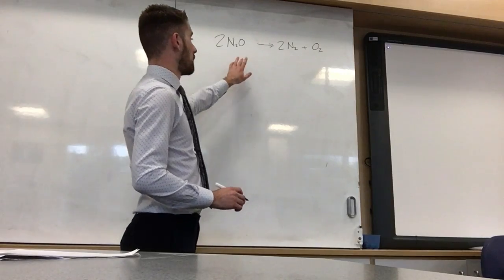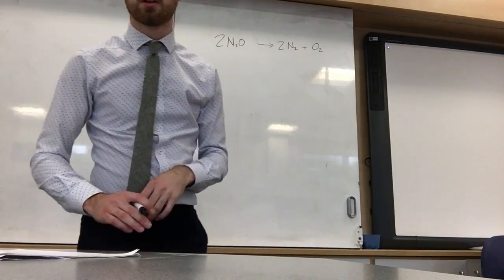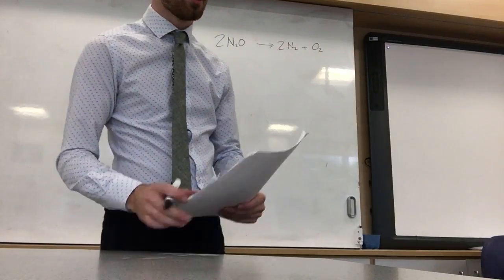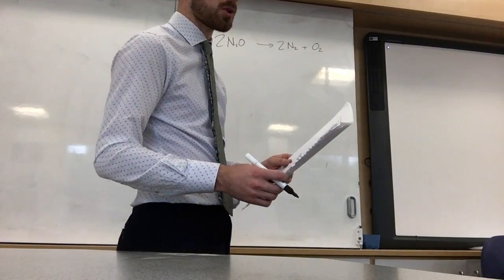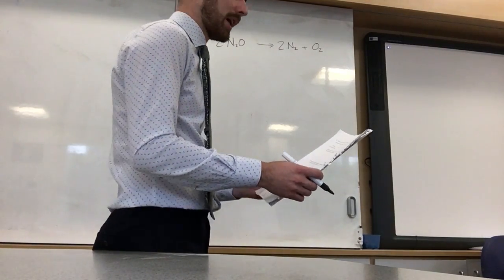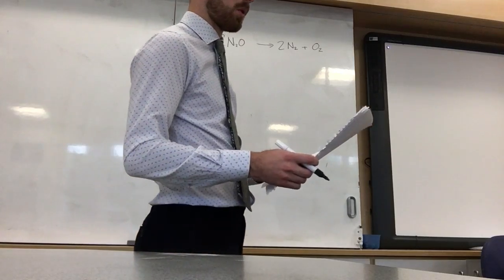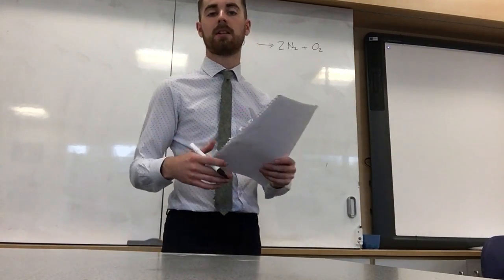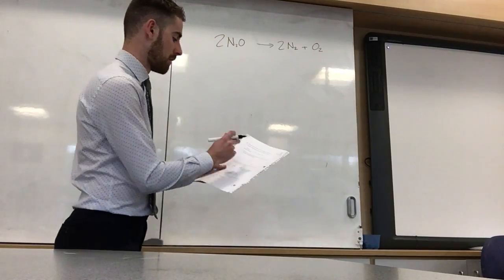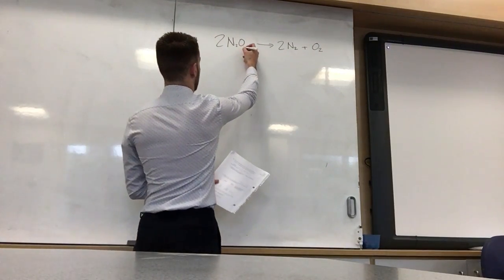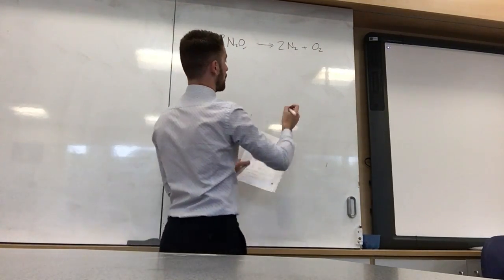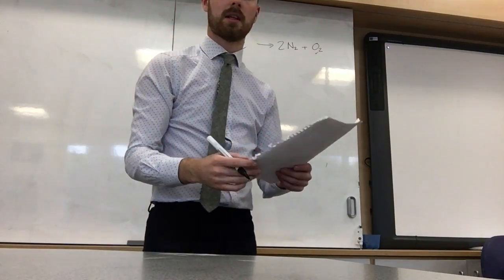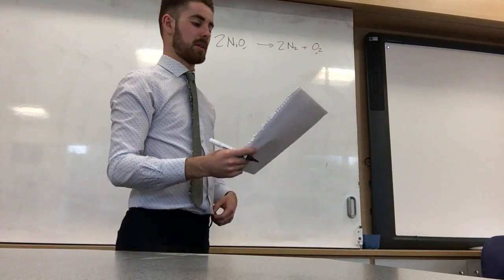So what I've done is I've copied that balanced equation on the board. We've already balanced the equation for you. So what is the question asking? It's asking you to calculate the mass of oxygen produced in grams when 22 grams of dinitrogen monoxide decomposes. So what does decompose mean? Think of a body. If a body decomposes it means it breaks down. So we're talking about dinitrogen monoxide and we're talking about oxygen. Nitrogen isn't mentioned in the question. You're given no information about nitrogen, so you don't need to concern yourself with nitrogen.